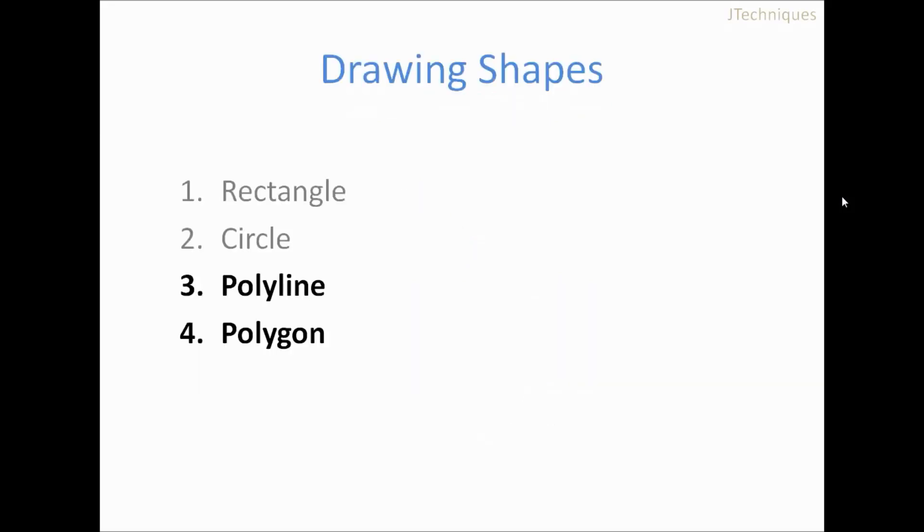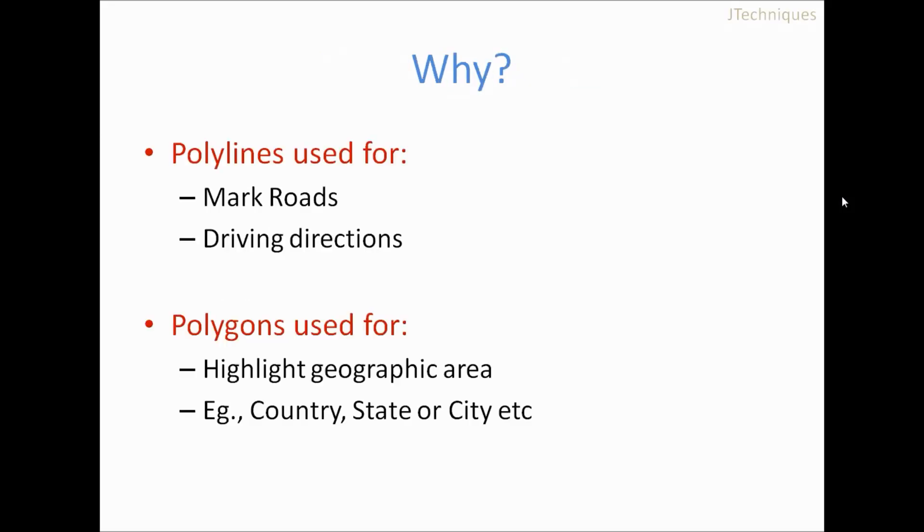If you have looked at Google driving direction services, you might have come across polylines when you look at a route map from source to destination. You can use polylines to mark the roads or driving directions. And polygons are basically used to highlight a geographical area like a city or country or any area.